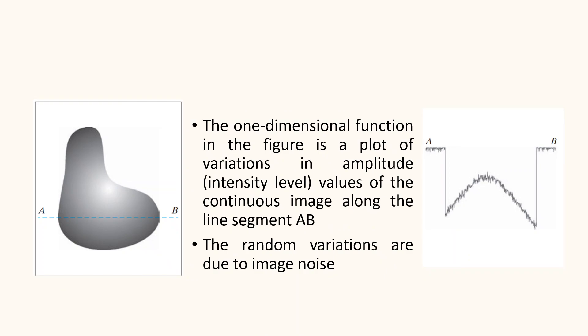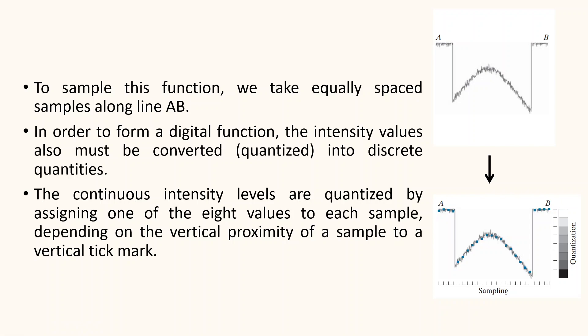This figure is a plot of amplitude — that is, intensity values — of the continuous image. The right side image is the plot of amplitude, that is intensity values, of the continuous image shown on the left, along the line segment AB. The random variation visible in the right side image is due to noise. To sample this function, we take equally spaced samples along the line AB as shown in this figure. The samples are depicted as small dark squares superimposed on the function, and their spatial locations are indicated by corresponding tick marks shown at the bottom of the figure.